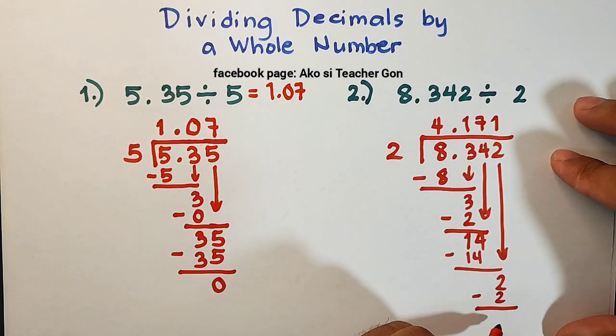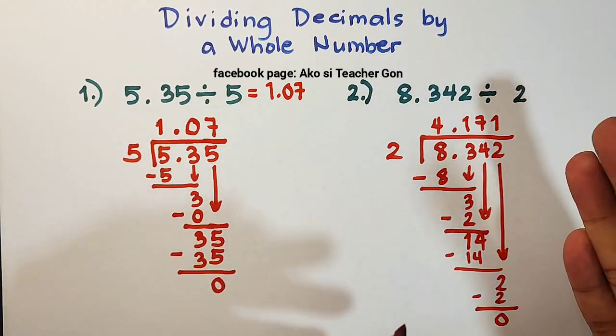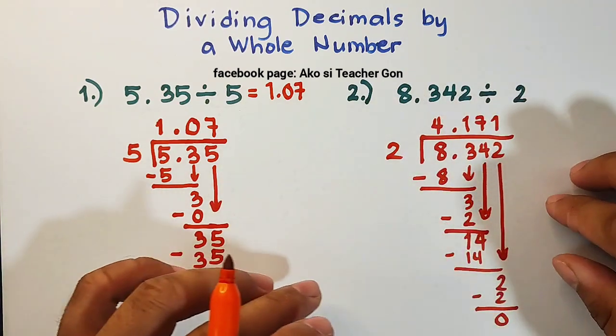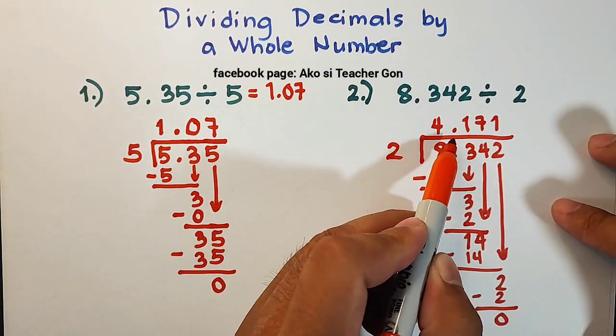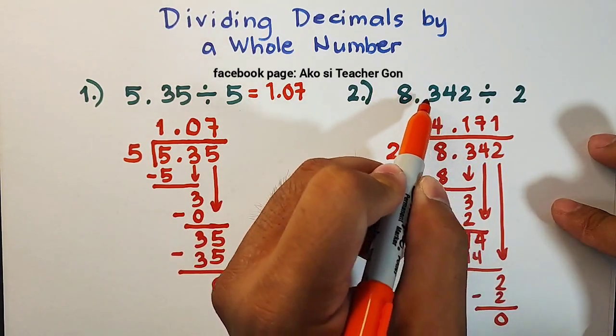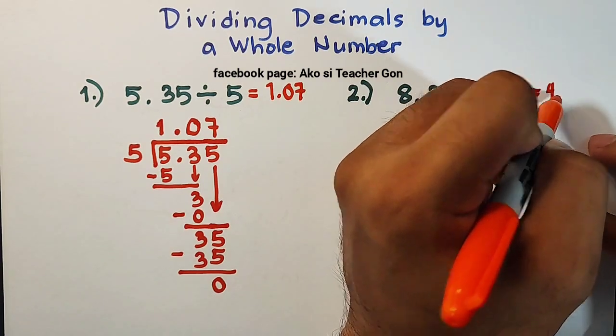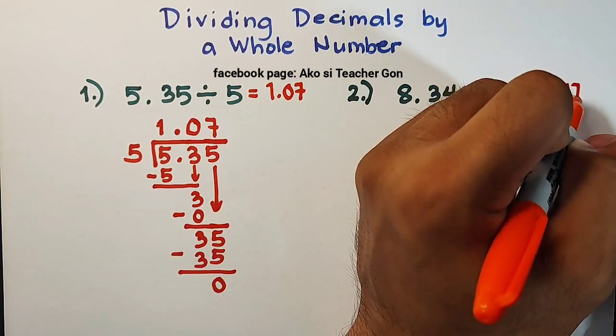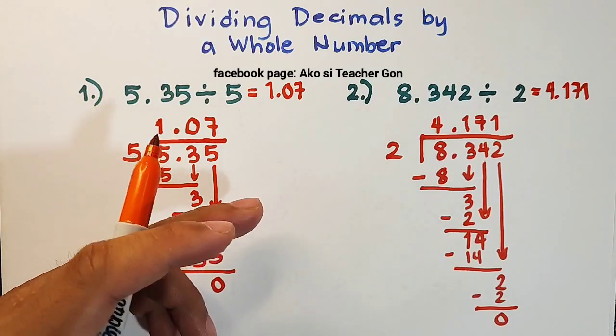2 minus 2 is equal to 0. Since your remainder is equal to 0 automatically, we don't need to extend any decimal values. So as you can see, the quotient here is 4.171. In other words, when we divide 8.342 by 2, that is equal to 4.171. So we hope guys, you learn something from this video.